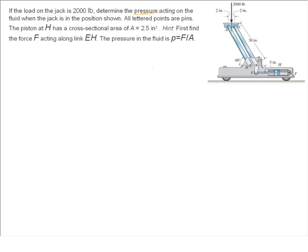So just keep that in mind for now. All lettered points are pins. The piston at H has a cross-sectional area of 2.5 square inches. And it gives you the hint: first, find the force F acting along link E-H. The pressure in the fluid is P equals F over A.